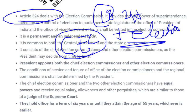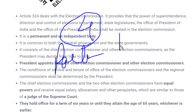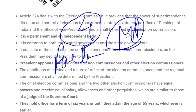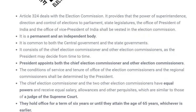The Election Commission does not conduct every election — it conducts only four types. Those four are: Parliament (Members of Parliament), state legislature (MLAs and MLCs), President, and Vice-President. You just have to remember these four categories; do not add any other category, because the Election Commission organizes elections only for these four.